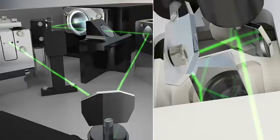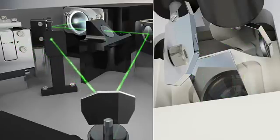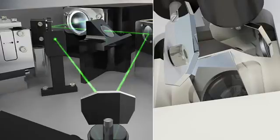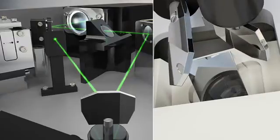While the galvo in the laser console is directing the beam away from the fiber, the two slit lamp galvos move into position for the next pulse in the pattern.